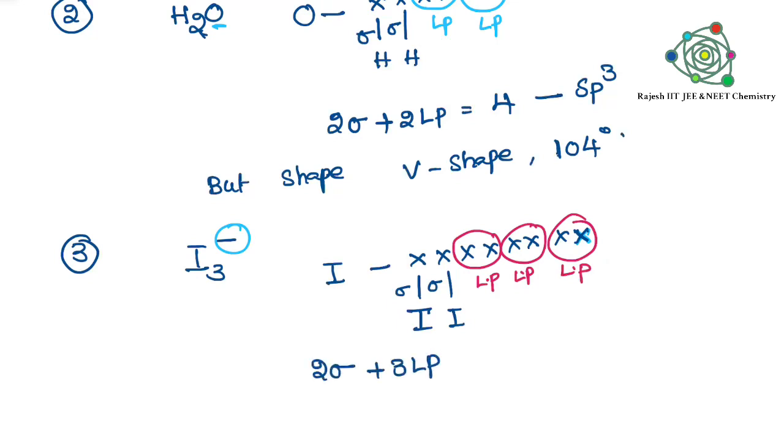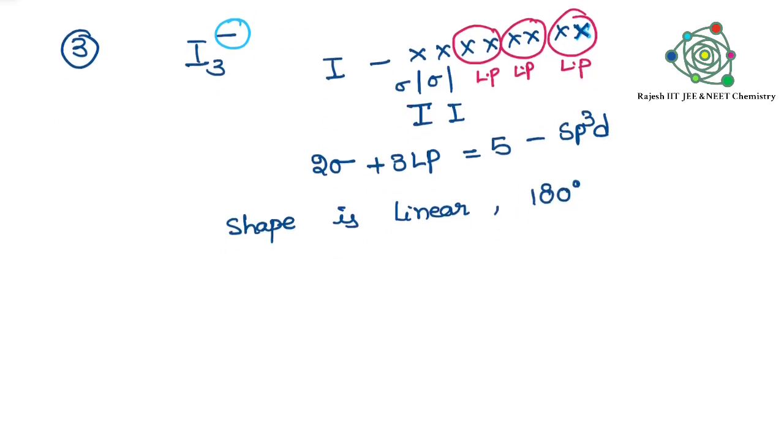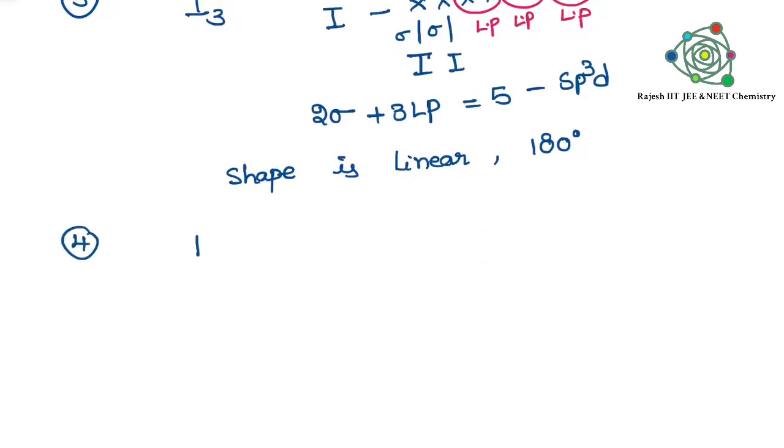Now two sigma bonds plus three lone pairs, that means total five. Five means what? sp³d. But here lone pairs are there, so shape will be what? Lone pairs change the shape. Therefore shape is nothing but a linear shape. You can see valence shell electron pair repulsion theory, you can get this bond angle is 180 degrees. Simply you can find out what is the hybridization.